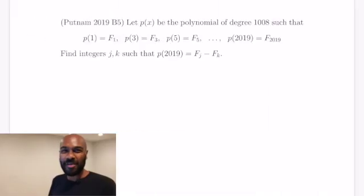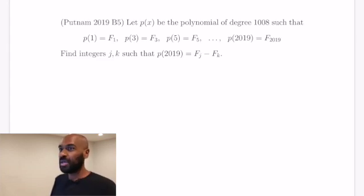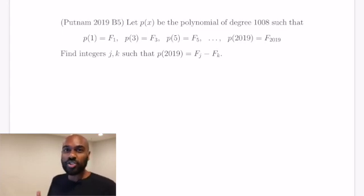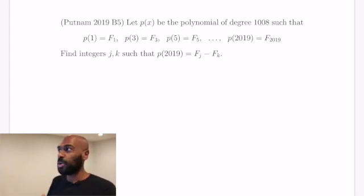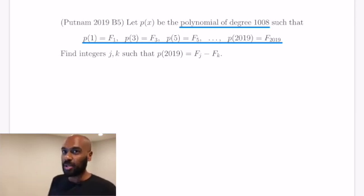Hey, welcome to today's video, I'm Prof Omar. Today we're interested in a problem where P of 1 is the first Fibonacci number, P of 3 is the third, and so on up to P of 2019 is the 2019th. We want to figure out that P of 2019 is a difference of Fibonacci numbers. We're going to use Lagrange interpolation, which takes known values of a polynomial and extracts the actual polynomial if we know the degree. Here we have a polynomial of degree 1008 and 1009 values of it.